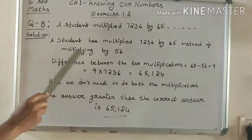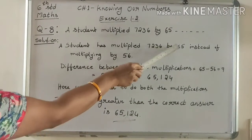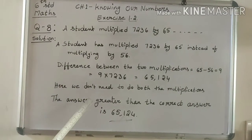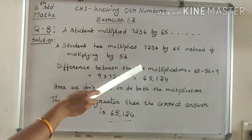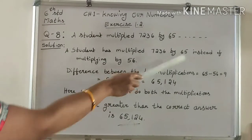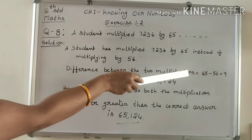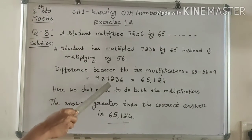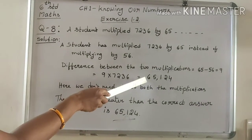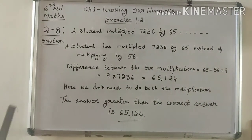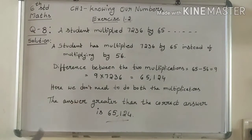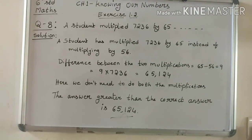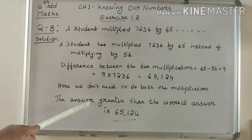We don't need to do both multiplications here. To find the difference, we subtract 56 from 65, which equals 9. Then we multiply 7,236 by 9, and we get 65,124. The difference between the two multiplications is 65,124. So the answer greater than the correct answer is 65,124.